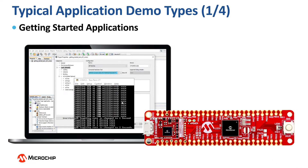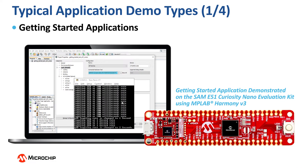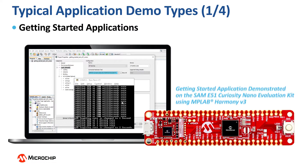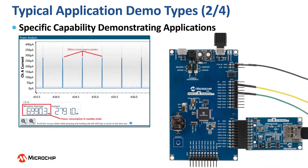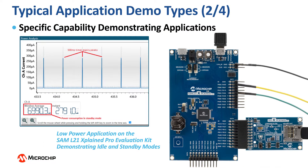The first type is getting started applications. These getting started applications demonstrate MPLAB Harmony 3 framework usage by exercising commonly used peripheral features. For example, a getting started application demo on the SAM E51 Curiosity Nano Evaluation Kit using MPLAB Harmony version 3. The second type of application demonstrates certain specific capabilities of our 32-bit MCUs.